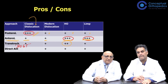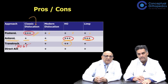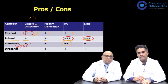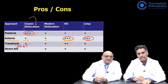The transtrochanteric approach was once a very preferred approach, propagated by Sir John Charnley, but most surgeons are no longer using it in routine hips. In difficult situations — such as fractures of the acetabulum — it may still be a very good approach to achieve adequate acetabular exposure.